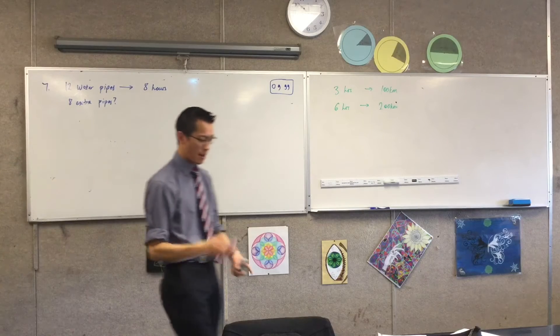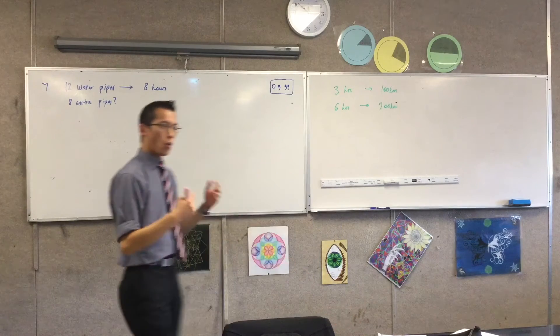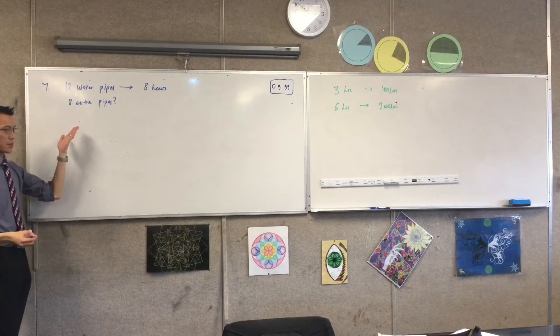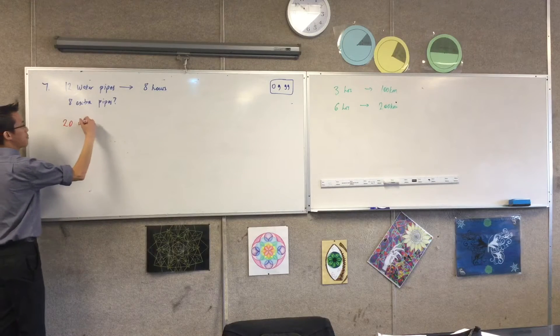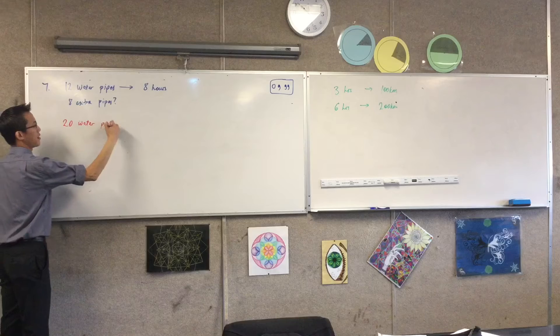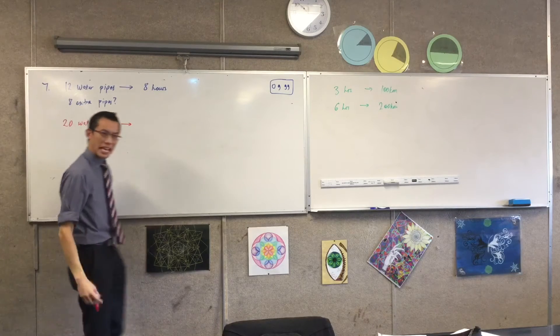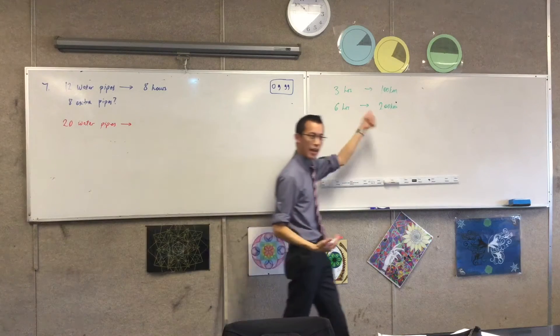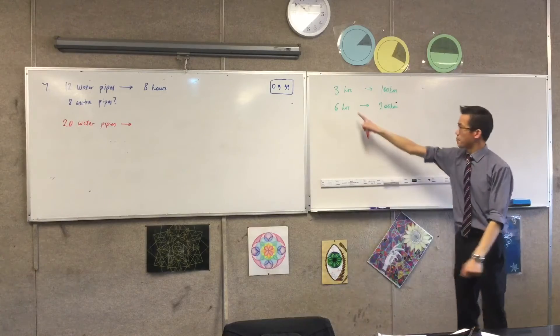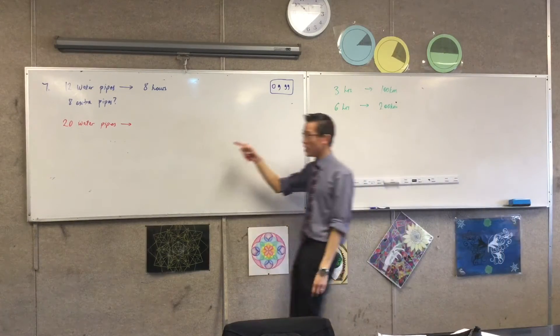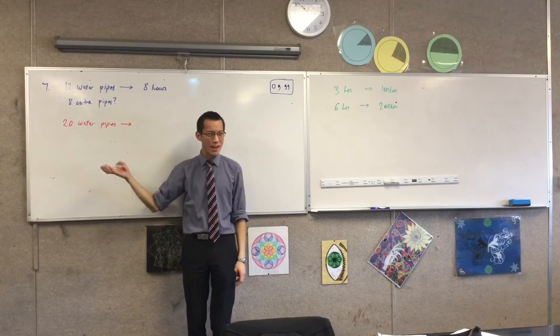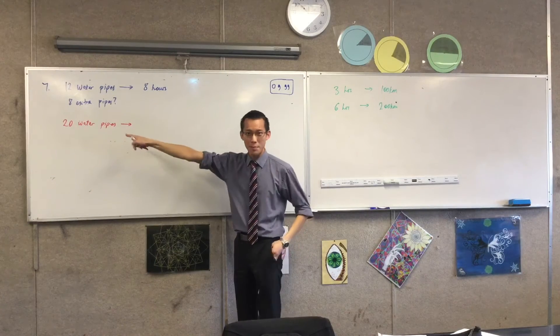Then you come to this question. Now I'm going to do the wrong way first. When you add these eight extra pipes, how many pipes are there now in total? There are 20 pipes now. Now if you apply this kind of logic, this is like more time more kilometers. So when you look over here, it doesn't seem that crazy to think more pipes equals...